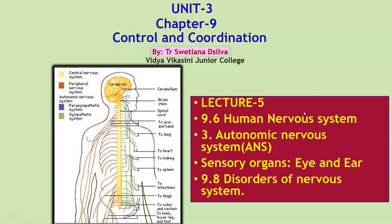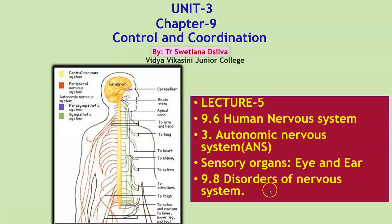Hello students, I am teacher Svetlana and in today's lecture we will continue to learn about the human nervous system. We will learn about the autonomic nervous system (ANS), the sensory organs — that is the eye and ear — and the disorders of the nervous system, which is covered in the chapter Control and Coordination. Let's begin.